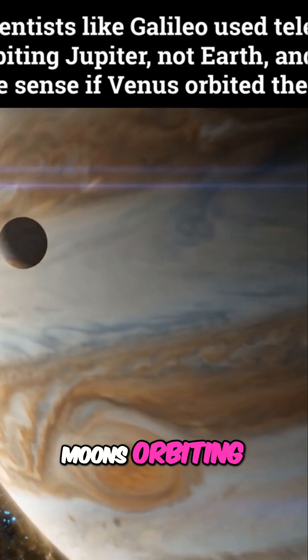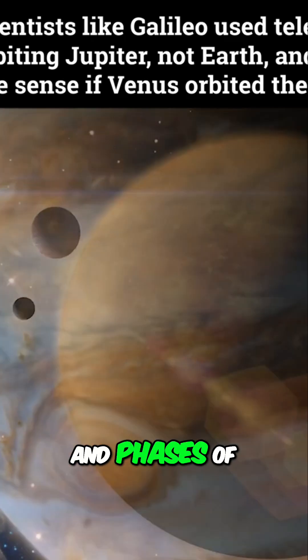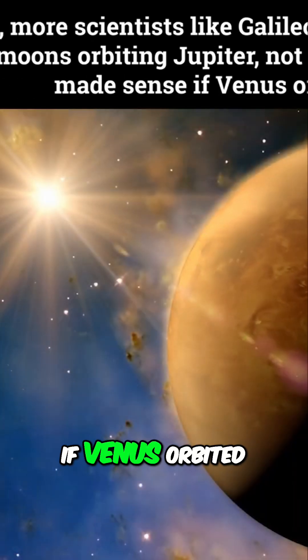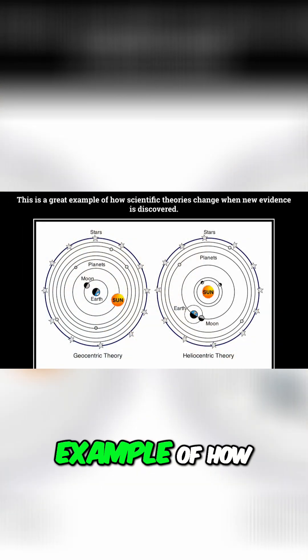Galileo observed moons orbiting Jupiter, not Earth, and phases of Venus that only made sense if Venus orbited the sun. This is a great example of how scientific theories change when new evidence is discovered.